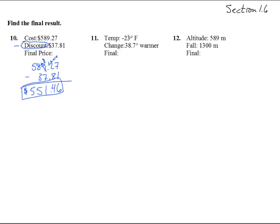Temperature is negative 23 degrees, and it goes warmer, which is a plus 38.7. So this is a subtraction problem, because they are opposite signs, 38.7 minus 23. You can put a .0 if you want there. 7, 5, 1, 15.7 degrees. Better put that degree F on there.